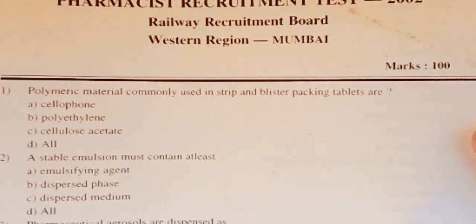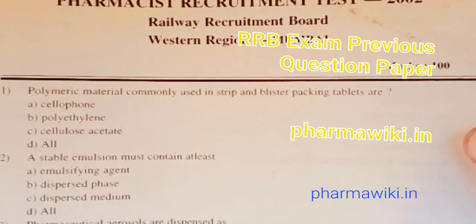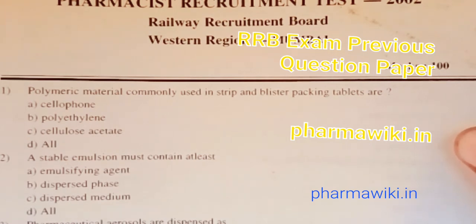Question 2: A stable emulsion must contain at least — options: A) emulsifying agent, B) dispersed phase, C) dispersed medium, D) all of the above. All three are important, so the answer is D, all of the above.